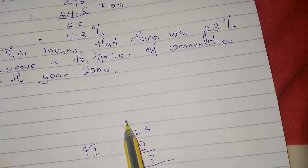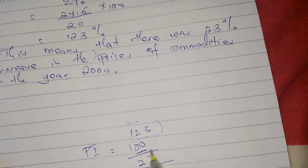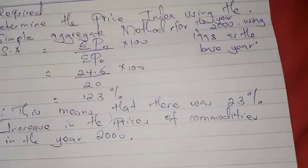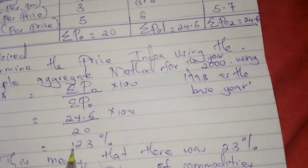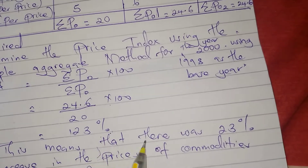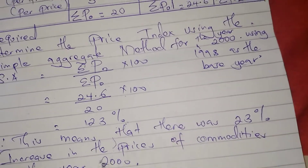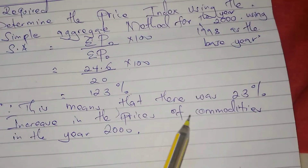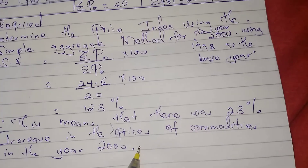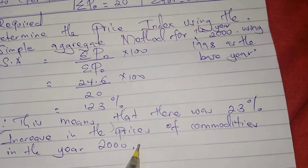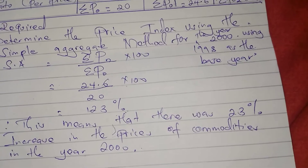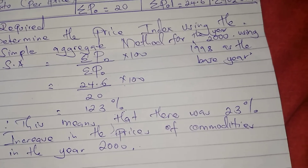This was an increase — the prices increased from 100 to 123. The base year always has a price index of 100. So for the year 2000, the price index is 123 percent, meaning there was a 23 percent increase in the prices of commodities in the year 2000. And that is the price index for 2000 using 1998 as the base year. Thanks for watching.